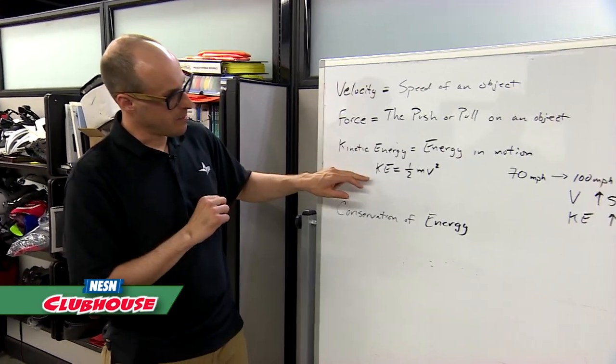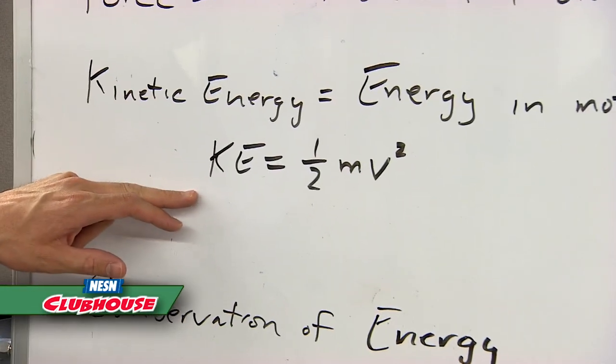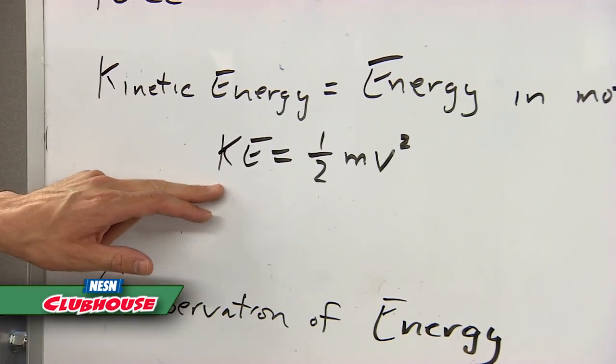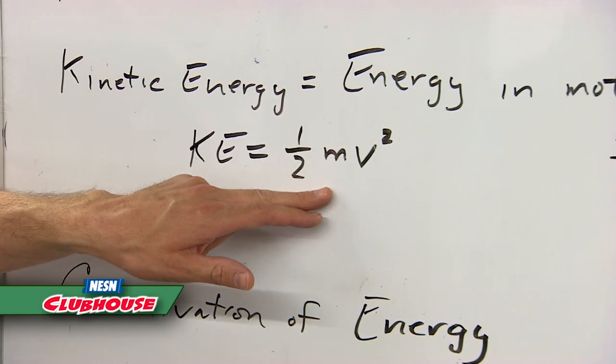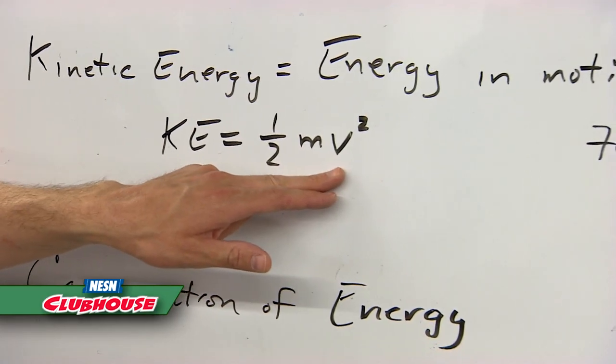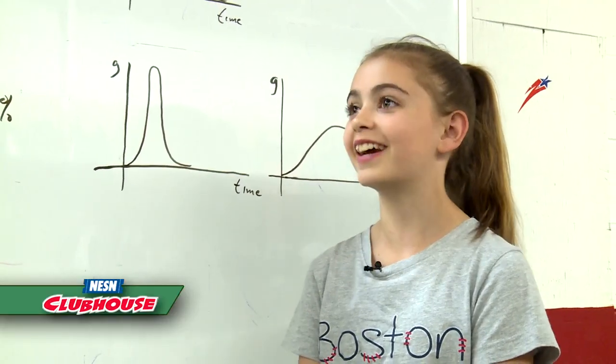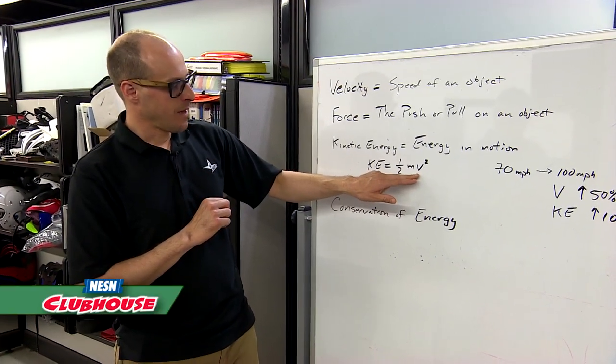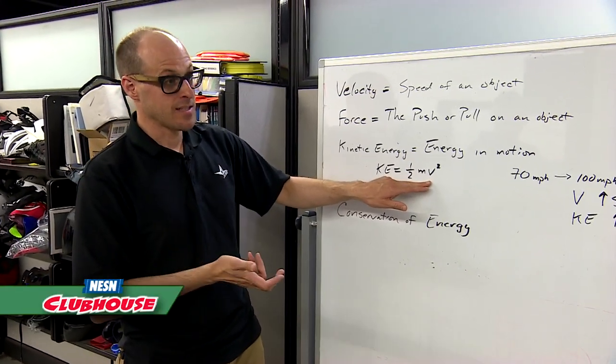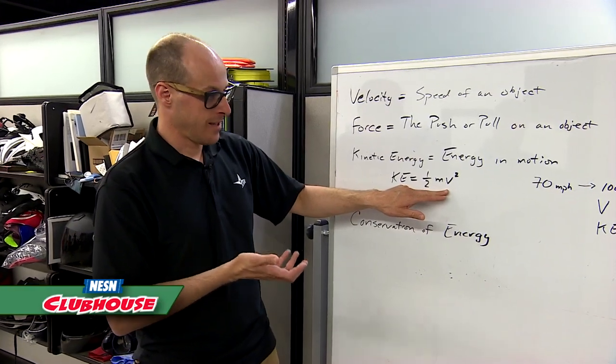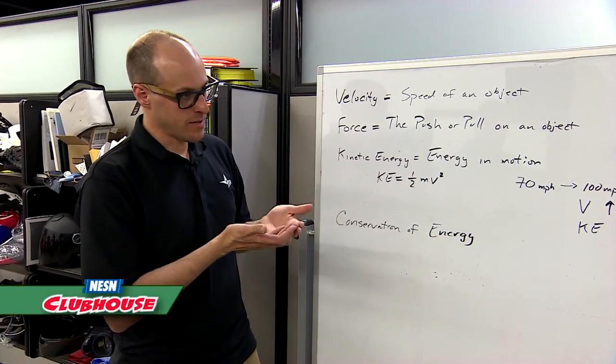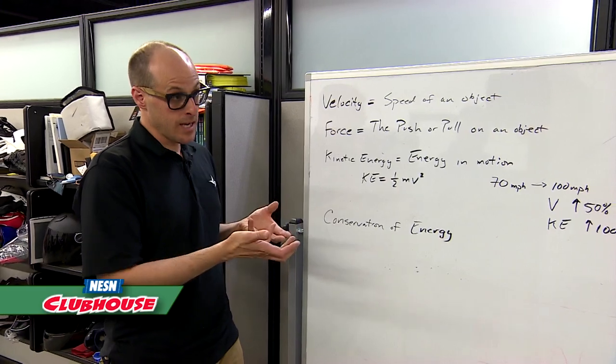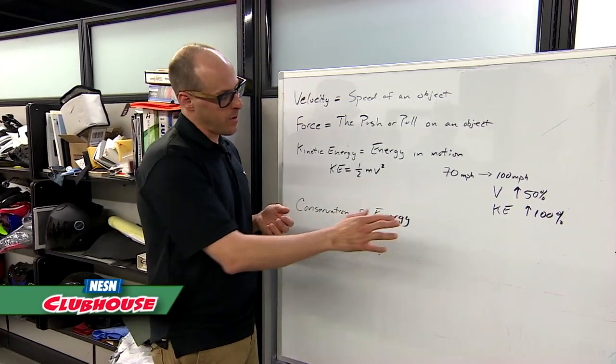When we think about the mathematical formula for kinetic energy, KE equals one-half times the mass of the object times velocity squared. Do you know what the square is? Basically V times V. That means that velocity plays a very important role in kinetic energy, and with a small increase in velocity you get a really big increase in energy.